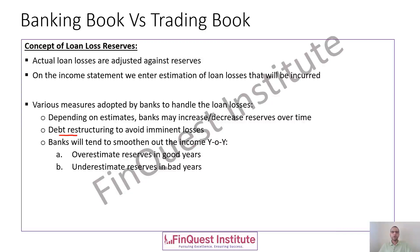Banks also tend to smooth out their income year over year. Analysts often talk about volatility in earnings, and banks try to reduce that volatility — which is preferred by stakeholders, analysts, and investors who prefer a consistent flow of income. Banks generally tend to overestimate reserves in good years and underestimate reserves in bad years, so they don't have too much volatility in reported income on their income statements. This completes a basic review of the banking book versus the trading book.